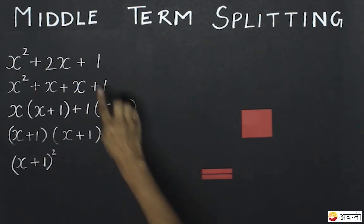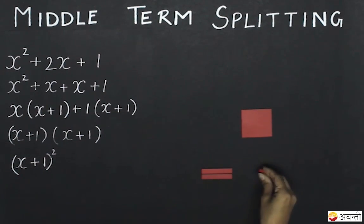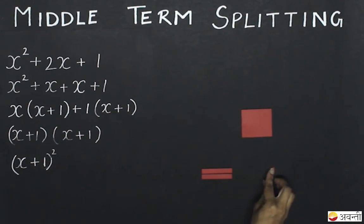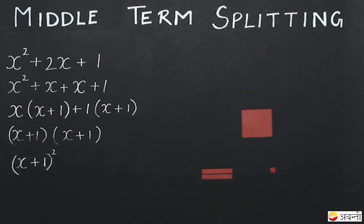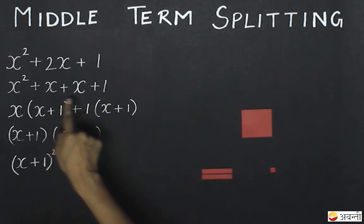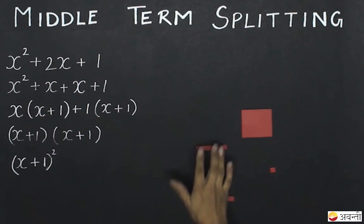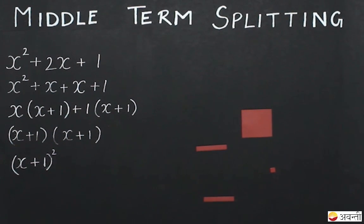One unit is left. I can represent 1 with the help of this one unit square. According to middle term splitting, I can split up 2x into x plus x — that is, I can split it up like this.